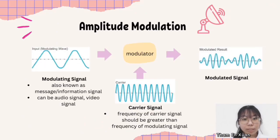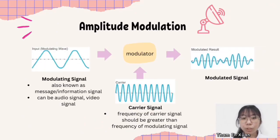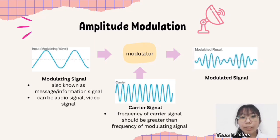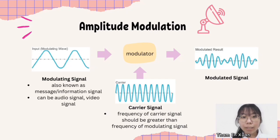There are two signals involved in Amplitude Modulation: the Modulating Signal and the Carrier Signal. The Modulating Signal, also known as the Information Signal or Message Signal, can be an Audio Signal or Media Signal. Meanwhile, the Carrier Signal is a carrier wave that is modulated with the Information Signal. The frequency of the carrier signal should be greater than the frequency of the Modulating Signal.